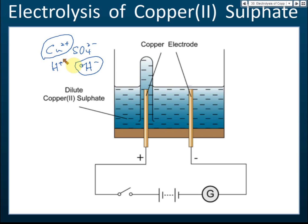These two are lower in the electrochemical series, provided that you use inert electrodes. If you use inert electrodes, copper will be selected to be discharged at the cathode, and hydroxide will be selected at the anode. Inert means carbon or platinum. But in this case, we do not use carbon or platinum — we use copper.